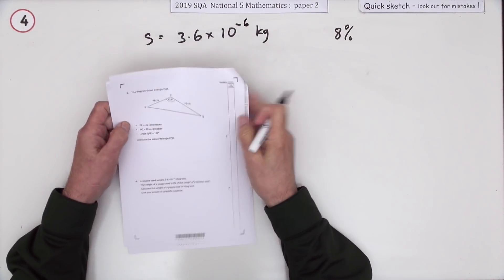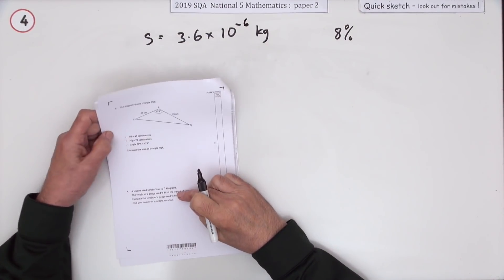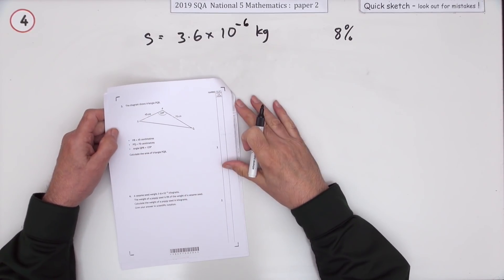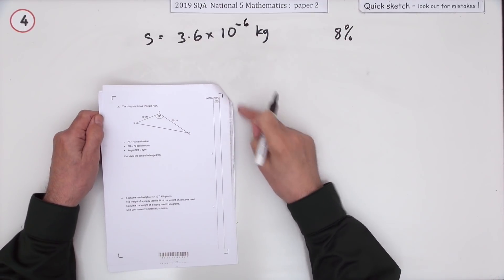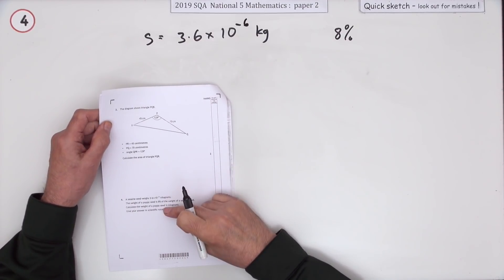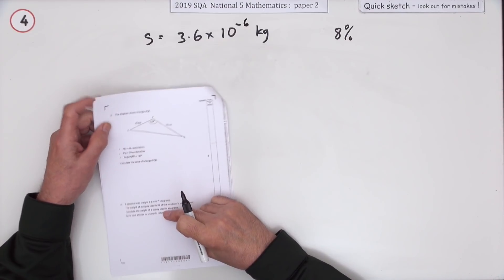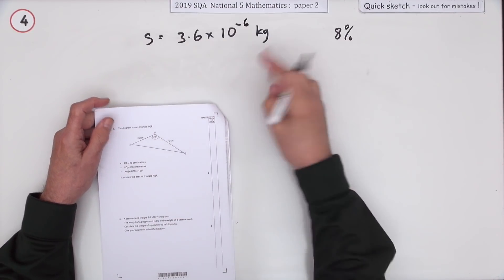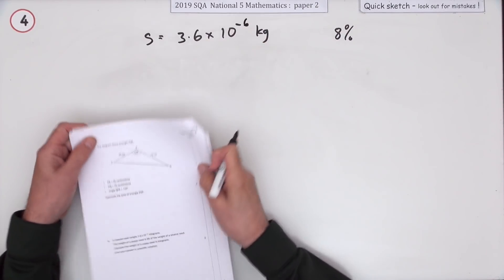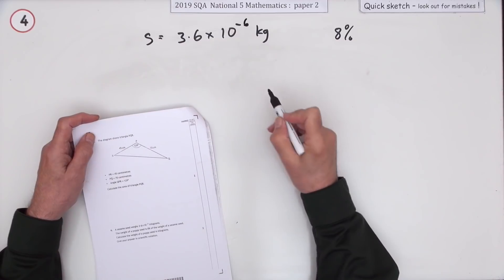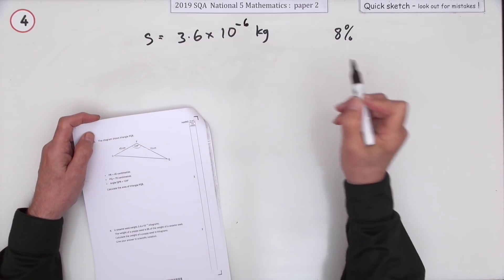Number four then. Scientific notation. It's a bit pointless putting this in paper two as a question of its own because you're just going to use your calculator and your calculator will do the scientific notation business for you. It's not as if you've got to multiply out and then reinterpret where the point should be and adjust the power of 10. It says a sesame seed weighs 3.6 times 10 to the negative 6 kilograms. A poppy seed is only 8% of that, so what does it weigh?